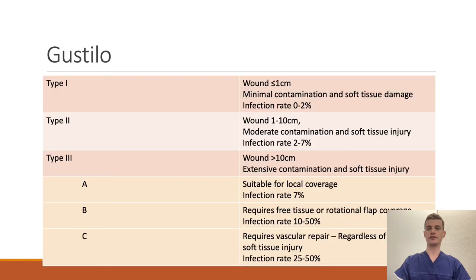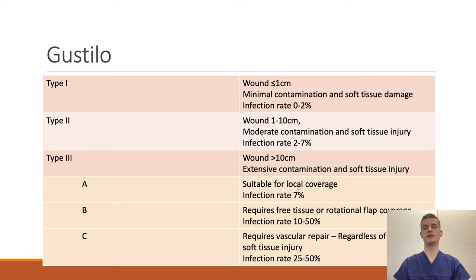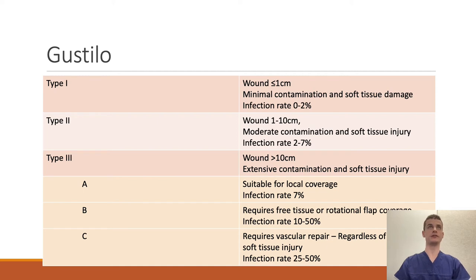The most widely used classification is the Gustillo classification. It is an older one, and some research shows the sensitivity and specificity are not the best. There is a high degree of inter-observer variability, and the Type 2 category is quite wide in its definition. In general, Type 1s are more your minor injuries — for example, a pinhole wound would be a Type 1.